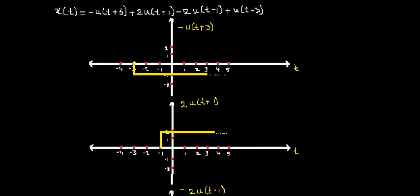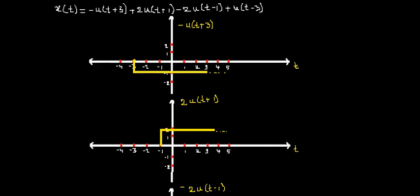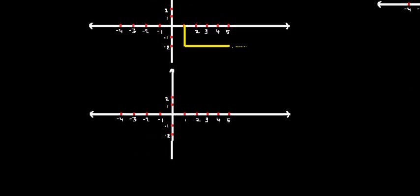The fourth signal is 2u(t-3). This is a simple shift performed on the unit step signal — the signal gets shifted to the right by 3. The amplitude is 1, so nothing has been done with respect to amplitude. Sketching 2u(t-3): the signal starts at t = 3 and goes till infinity.